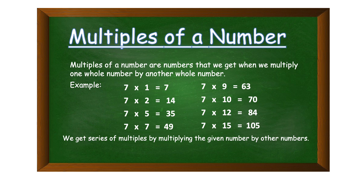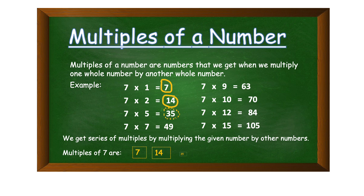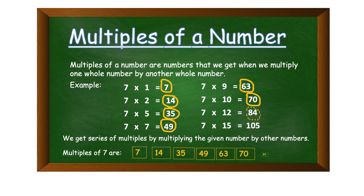We get a series of multiples by multiplying the given number by other numbers. So the multiples of seven are: seven, fourteen, thirty-five, forty-nine, sixty-three, seventy, eighty-four, and one hundred and five.